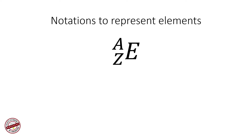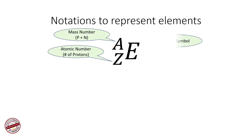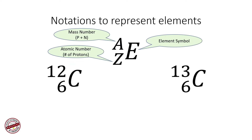Before we define isotopes, we will look at the notations used to represent elements. Here, A represents the mass number and Z represents the atomic number or number of protons in an atom. Mass number is the sum of the number of protons plus neutrons. The symbol E will be replaced by the symbol for the element.